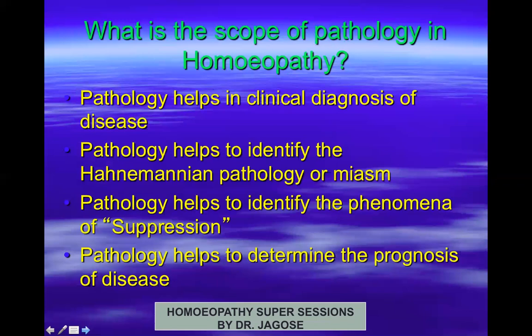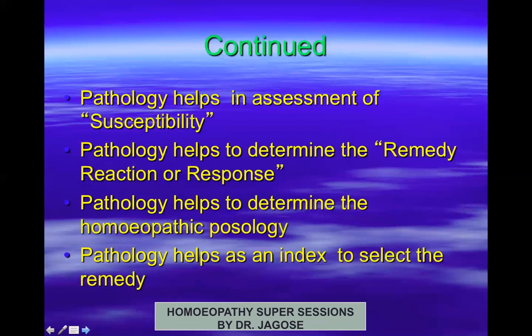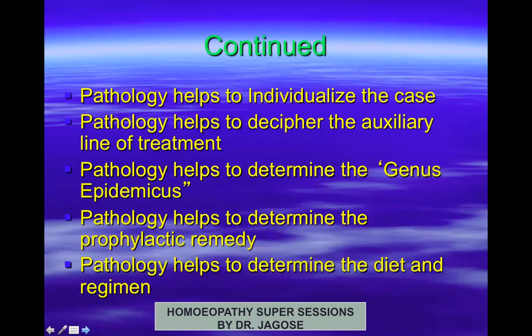The scope of pathology in homeopathy includes: clinical diagnosis of disease; identifying the Hahnemannian pathology or miasms; identifying the phenomena of suppression; determining the prognosis; assessing susceptibility; determining remedial reaction or response; determining homeopathic pathology; serving as an index to select the correct remedy; individualizing the case; finding the constitutional treatment; determining the genus epidemicus in epidemic cases; determining the prophylactic remedy; and establishing the diet and regimen required.